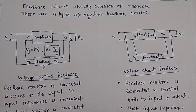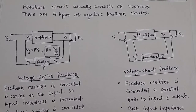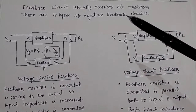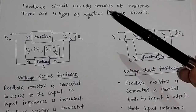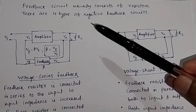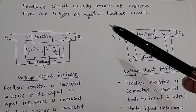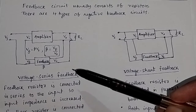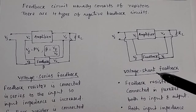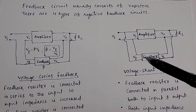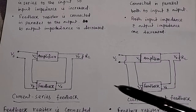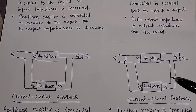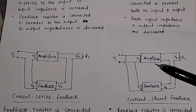You must have an idea of what a feedback circuit is and how many types of feedback circuits there are. Feedback circuits usually consist of resistors. There are four types of feedback circuits: the first is voltage series feedback, the second is voltage shunt feedback, the third is current series feedback, and the fourth is current shunt feedback.